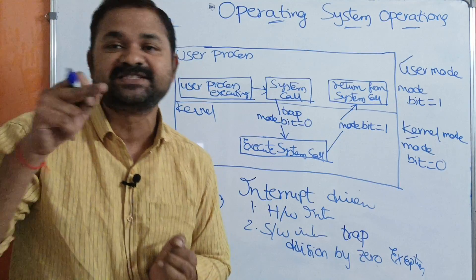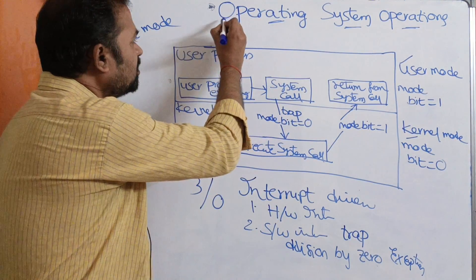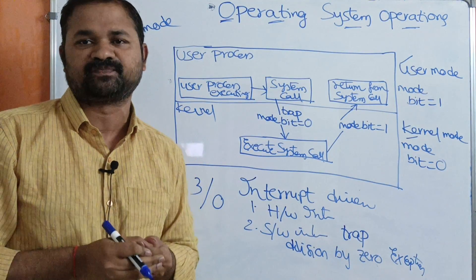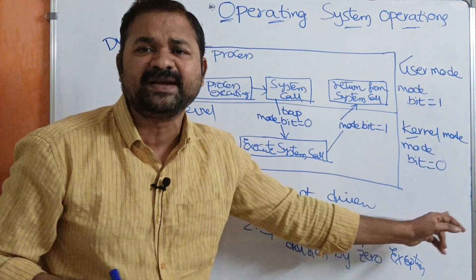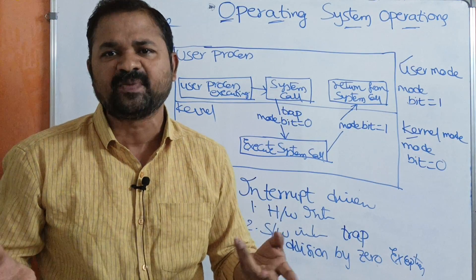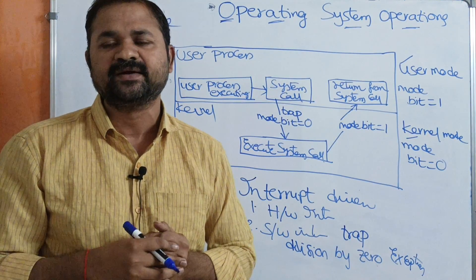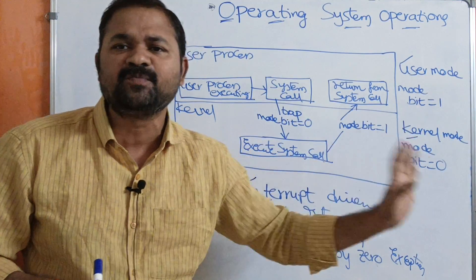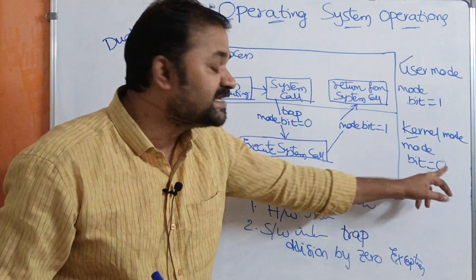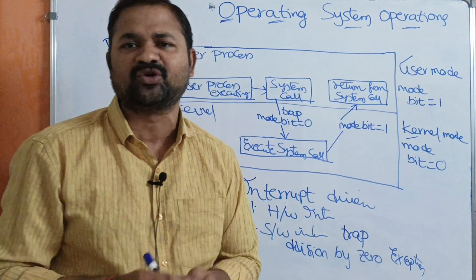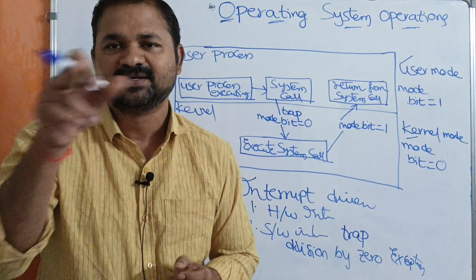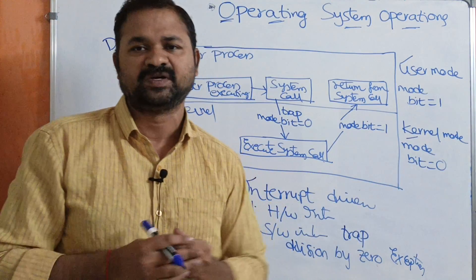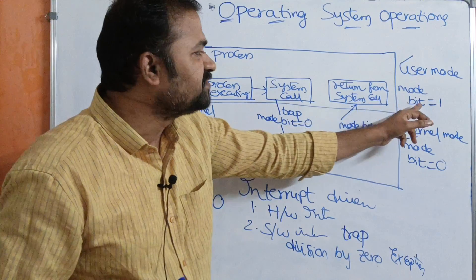For remembering purposes: the first letter of 'Operating System' is O, so let us assume O stands for zero. Kernel mode means the mode bit is zero. There is no difference between operating system and kernel — both are the same; the kernel contains the important functions of the operating system. So if the mode bit is zero, it is kernel mode. If the mode bit is one, it is user mode.